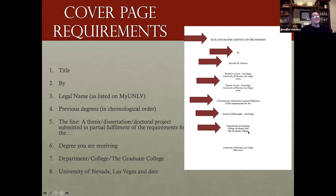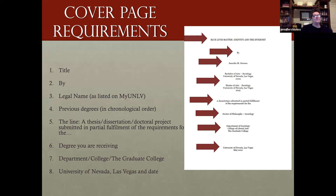After the degree section, the next part is your department, college, and grad college. We provide a list in our cover page manual of how each degree should be written out along with the correct department, college, and grad college name — since department names can change. The final section on your cover page is UNLV written out and the graduation month and year. The month is always the semester in which your degree is conferred — either May, August, or December — and that's all in the cover page manual.